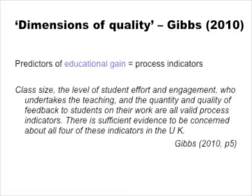I've chosen a quote by Graham Gibbs as an example of one of the complexities and difficulties of carrying out educational evaluation. These four criteria that Gibbs refers to — class size, student effort, who teaches, and quantity and quality of feedback — are according to Gibbs the best predictors of student gain through engagement with their course. What Gibbs is concerned about is that our commonly used quality assurance processes don't normally gather good data about them.